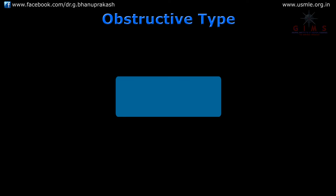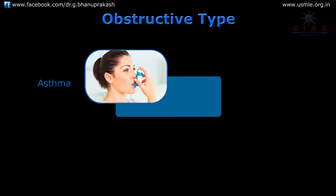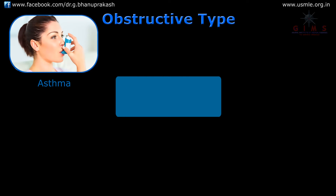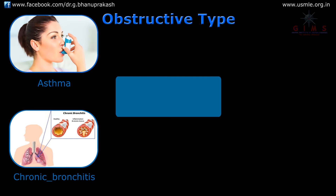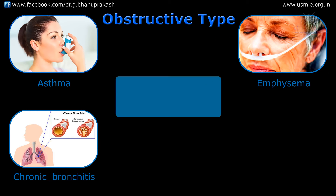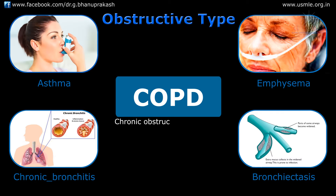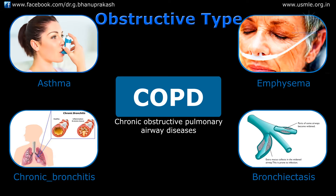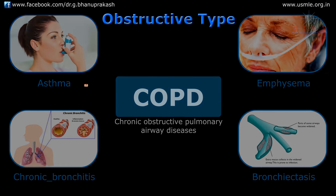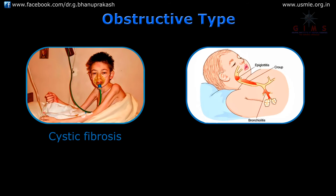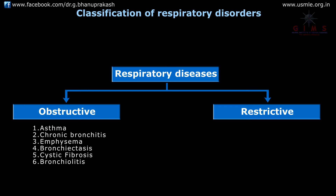The obstructive type of respiratory diseases includes asthma, chronic bronchitis, emphysema, and bronchiectasis — all four come under COPD, which stands for chronic obstructive pulmonary airway diseases. Other obstructive types include cystic fibrosis and bronchiolitis.